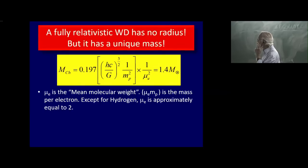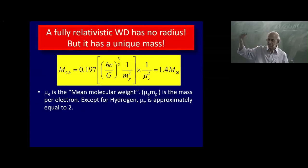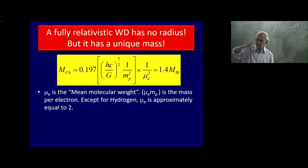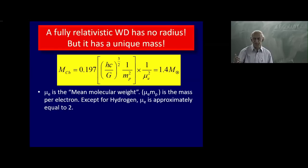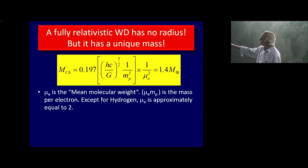But first, what do we expect? We know that a fully relativistic white dwarf has no radius — it has no radius but a unique mass. As we saw in the description of the Chandrasekhar limit, as you go to more and more massive stars, the radius gets smaller and smaller, finally going to zero radius at that mass. The Chandrasekhar mass should be interpreted as a limiting mass, given by a beautiful expression multiplied by 1 over μ_e squared, where μ_e is the mean molecular weight.